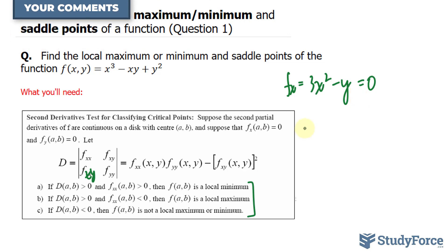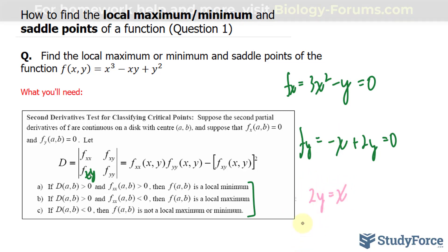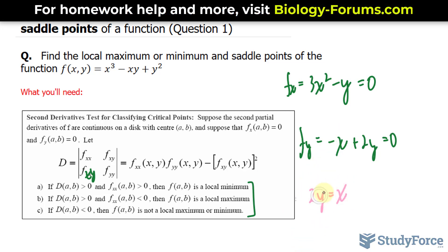The partial derivative with respect to y: the x³ term becomes 0, the -xy term becomes -x, and the y² term becomes +2y. Set that equal to 0. Now we have a system of two equations and we need to solve them simultaneously. We can do that by taking 2y = x from the second equation and substituting into the first.